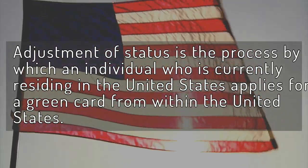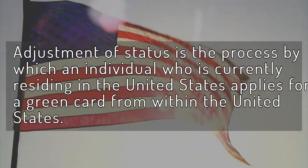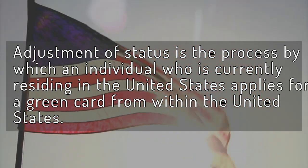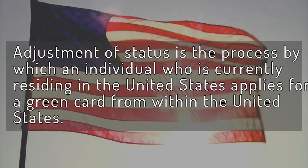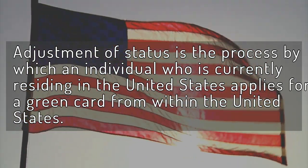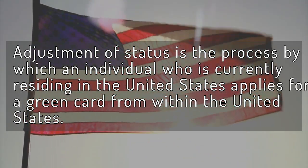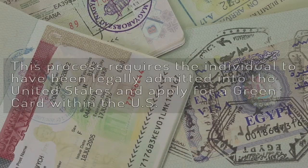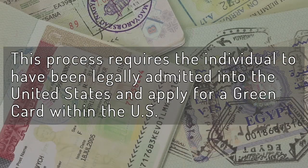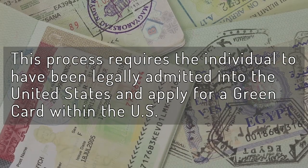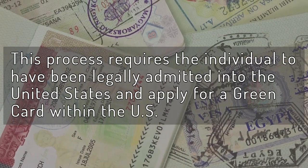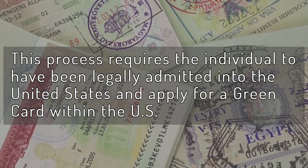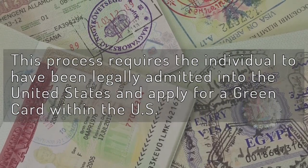Adjustment of status is the process by which an individual who is currently residing in the United States applies for a green card from within the United States. This process requires the individual to have been legally admitted into the United States and apply for a green card within the U.S.